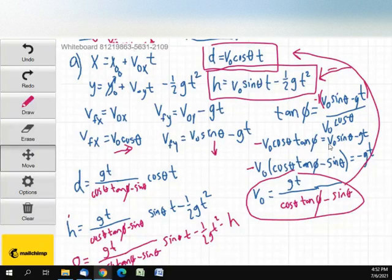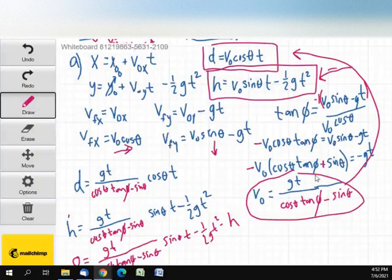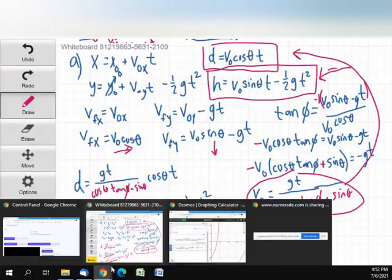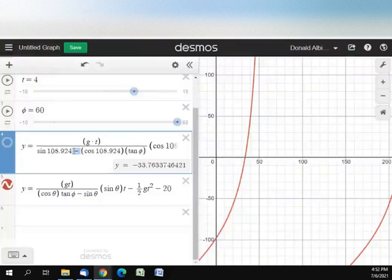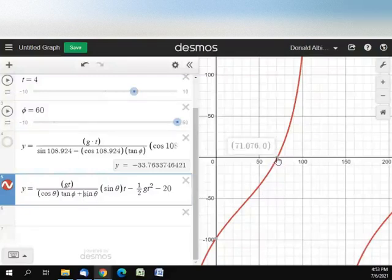And I'm looking back at my work. I think I made a mistake in here. Negative V zero cosine phi tan theta minus V zero sine theta. That would put a plus right here. So that's going to put a plus down here, put a plus down here, which will put a plus down here. Now let's change that to plus. There we go. 71.1 degrees.